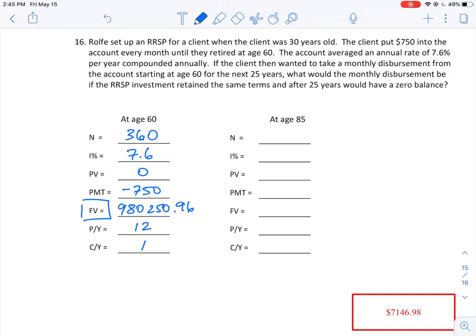Then at age 60 he retires, and he wants to take money out every year for 25 years until we have a zero balance. So zero balance means the future value goes to zero. The present value of the investment here is going to be $980,250.96.